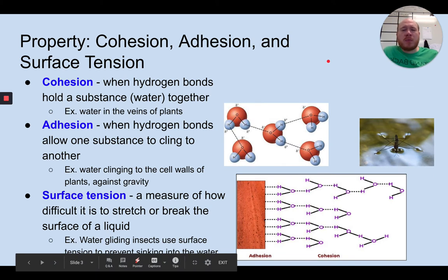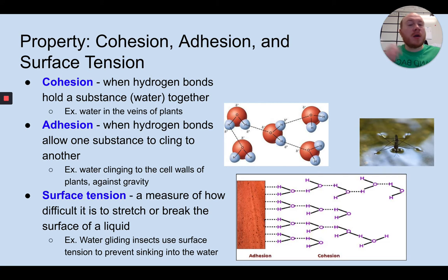There are some really important vocab words that we need to know about properties of water. The first is called cohesion. I like to think of it as cooperation between water molecules. It's when the hydrogen bonds hold a substance like water together. An example would be water in the veins of plants. The water molecules are all held together by hydrogen bonds between other water molecules. That allows water to stick together as it's being pulled up through the plant.